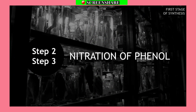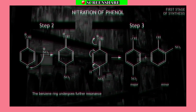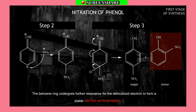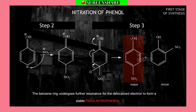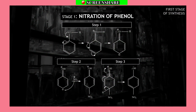In steps 2 and 3, the benzene ring undergoes resonance for the delocalized electrons to form stable ortho-nitrophenol. The benzene ring undergoes resonance for the delocalized electrons to form stable para-nitrophenol. That concludes the nitration of phenol.